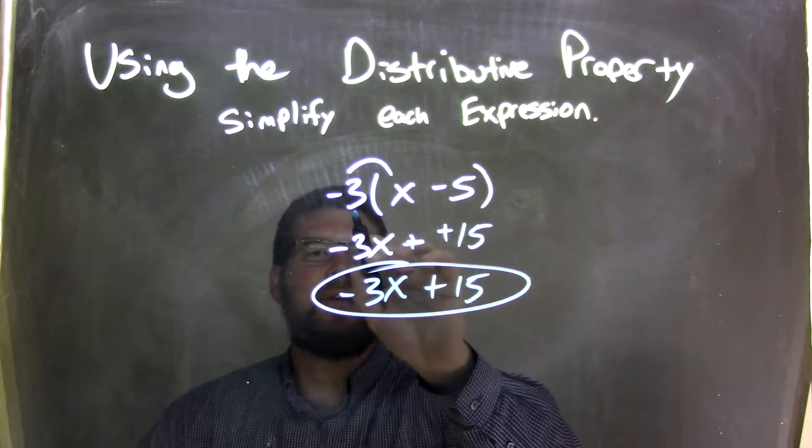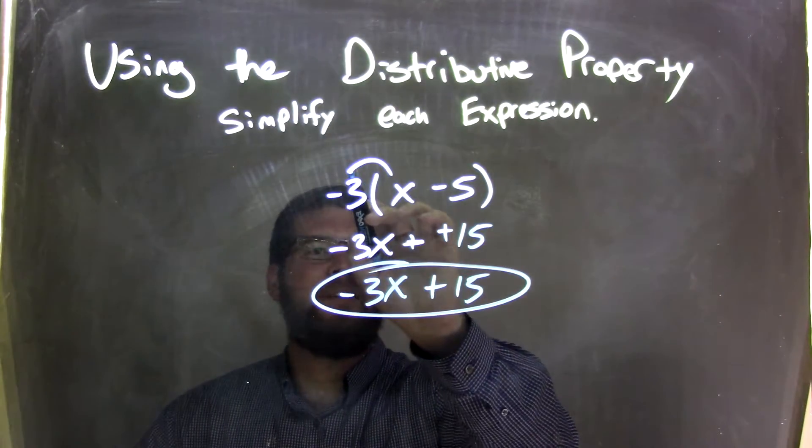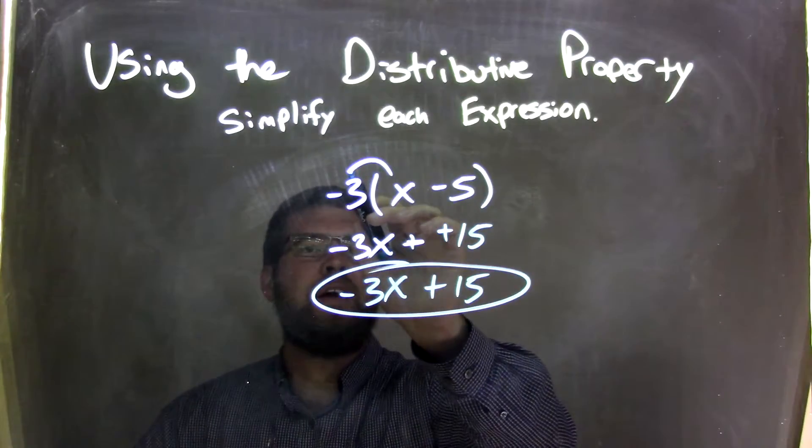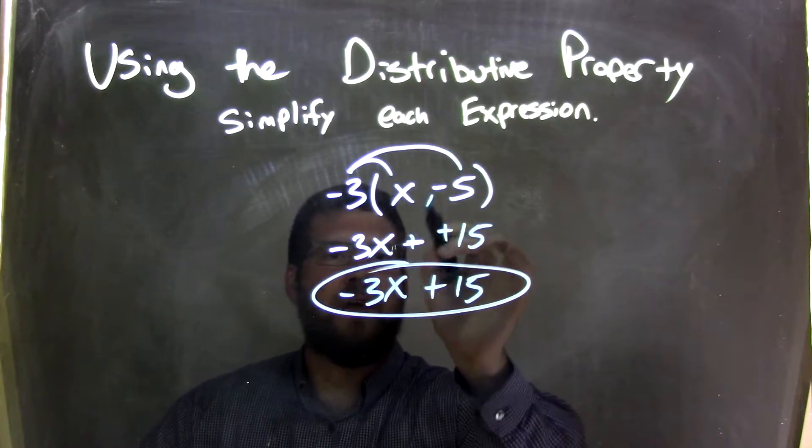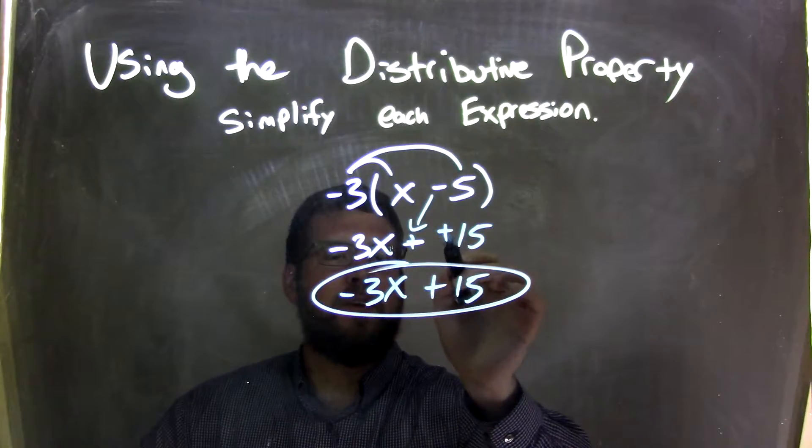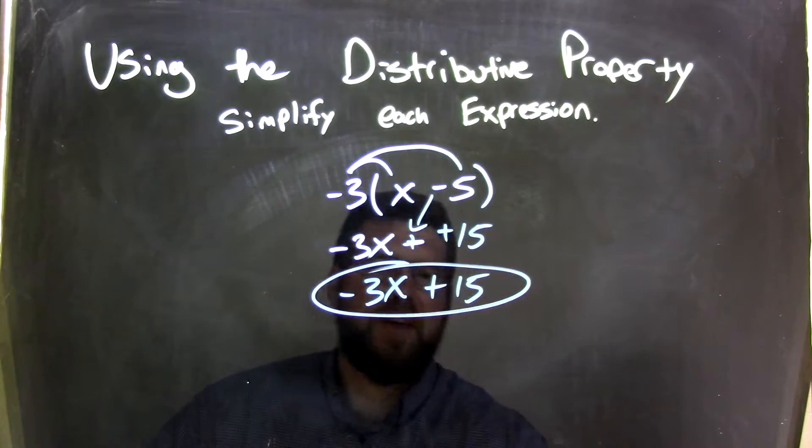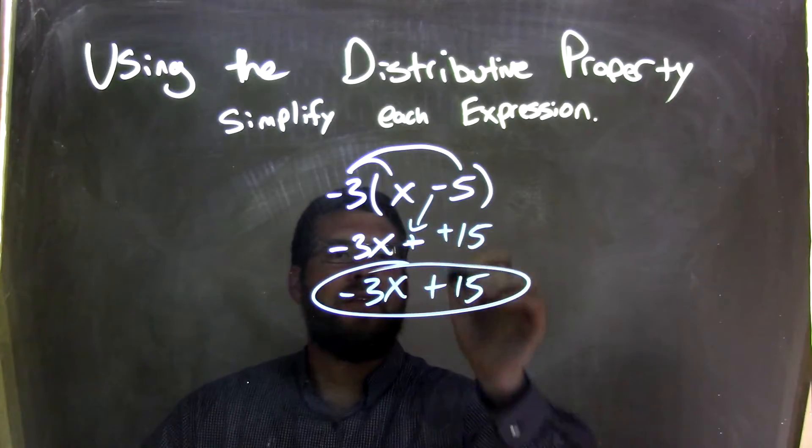So we have negative 3 on the outside. Multiply by x is negative 3x. We then take the negative 3, which I forgot to draw the arc. Negative 3 times 5 is negative 15. I brought down the subtraction here, and I added a negative 15. Subtracting a negative is the same thing as adding a positive, so I wrote the plus signs there.